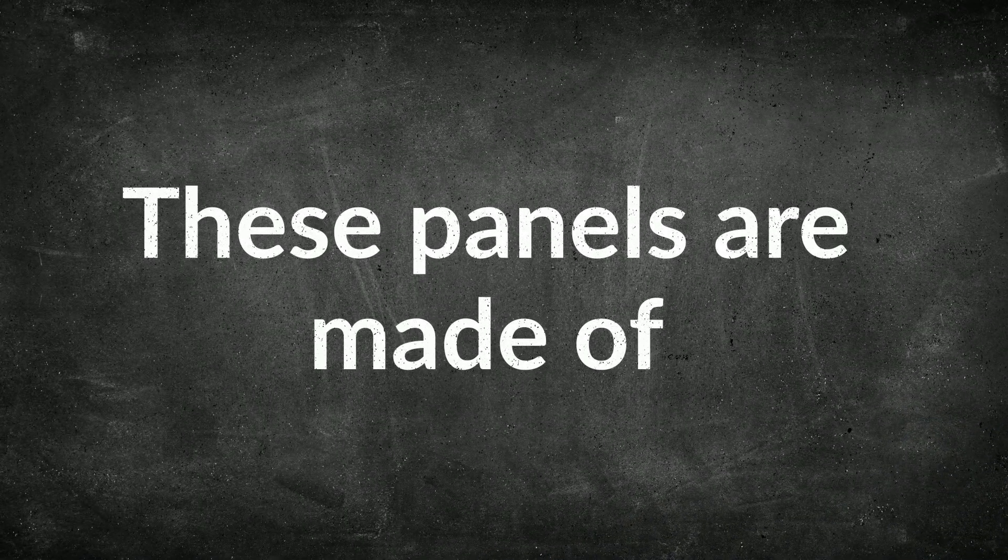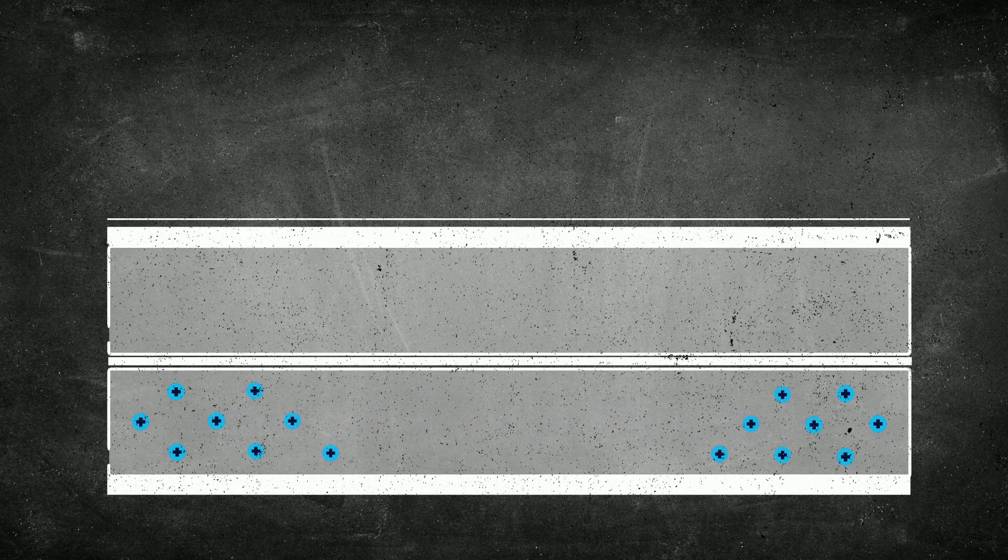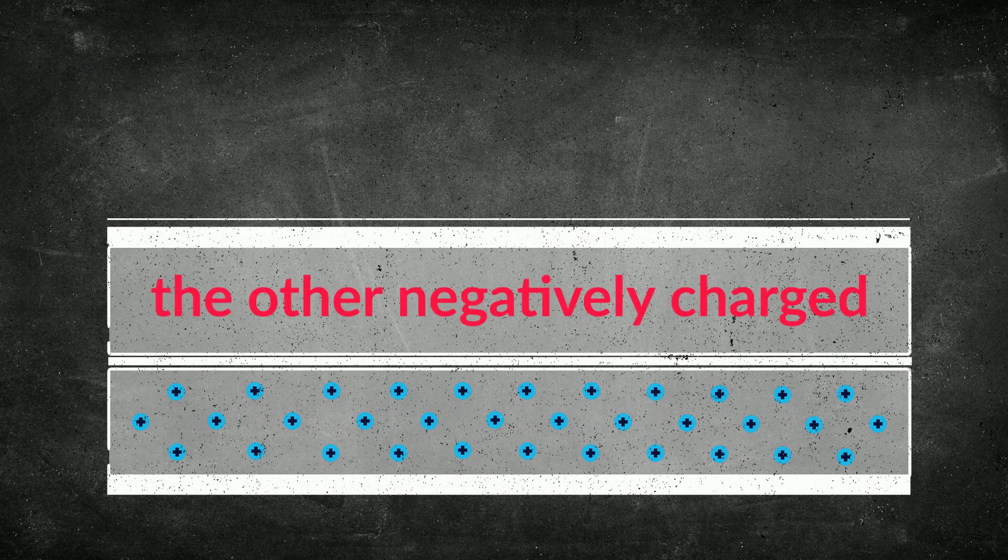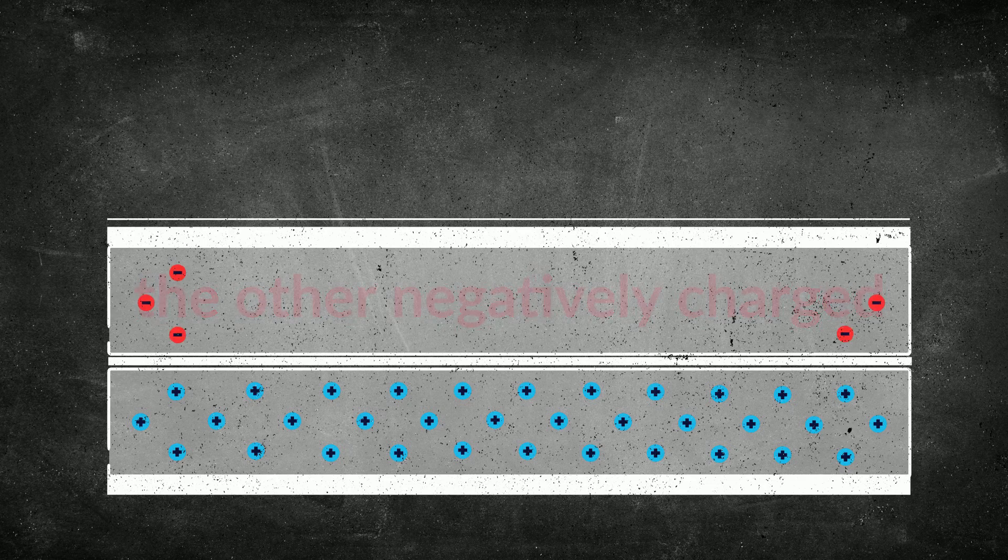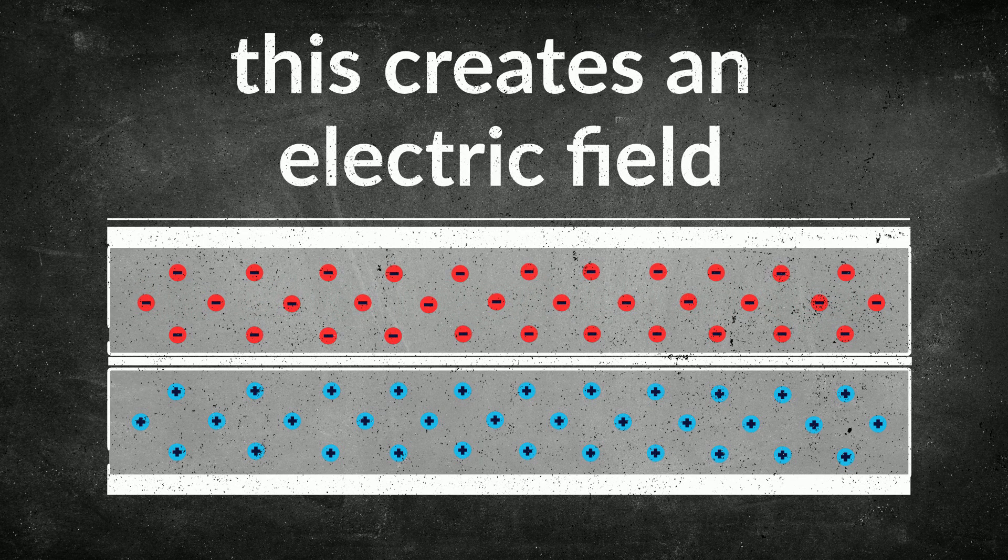These panels are made of two layers of semiconducting cells. One positively charged, the other negatively charged. This creates an electric field.